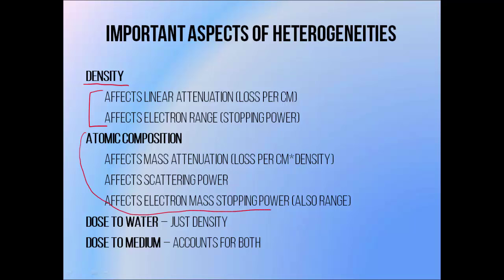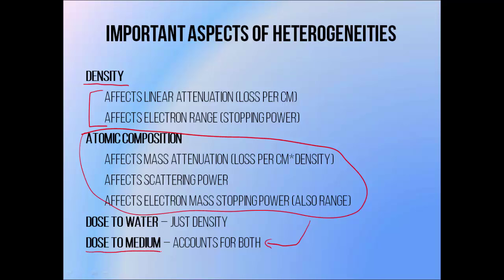Varying atomic composition has a more complicated effect on dose distributions. It affects things like the mass attenuation coefficient or the mass stopping power — things that depend on the atomic composition but not the density. When a treatment planning system accounts for all of these variables it's said to be calculating dose to medium. When a treatment planning system accounts only for density and not atomic composition, it's said to be calculating in terms of dose to water.